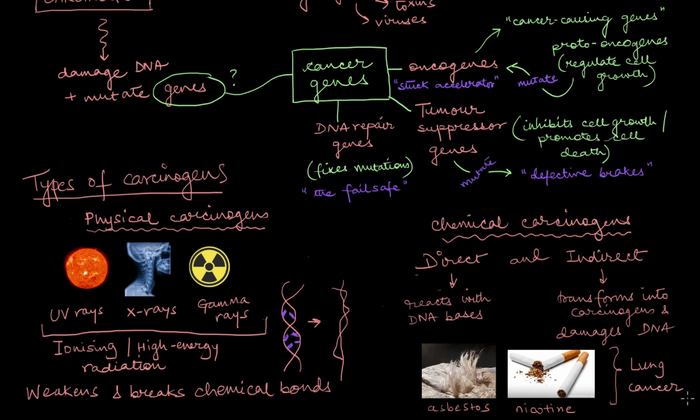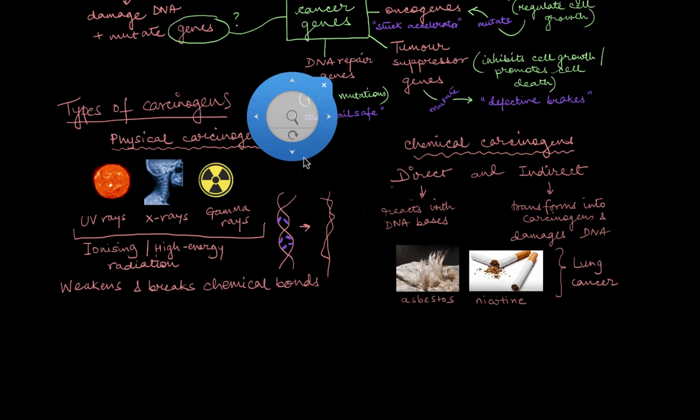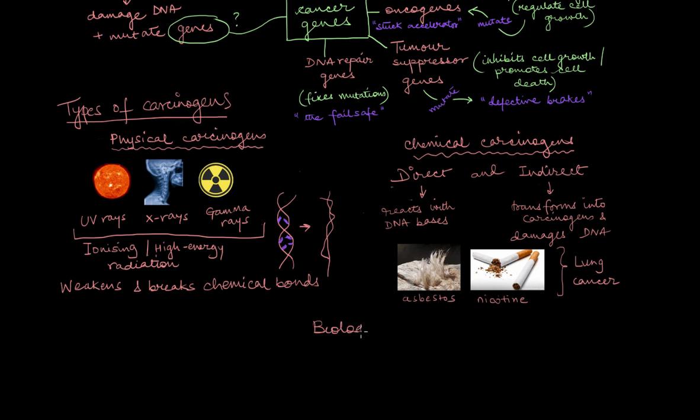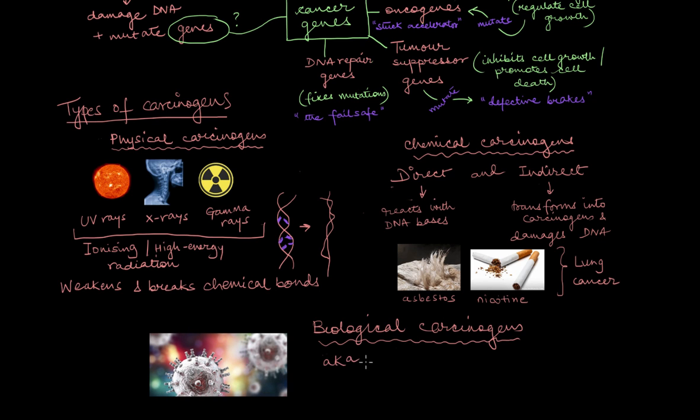There is another type of carcinogen which is rather peculiar in nature—biological carcinogens, aka viruses. Certain kinds of viruses called oncogenic viruses can cause cancer with the help of their own set of oncogenes. They either insert these viral oncogenes into our cell and wreak havoc, or they activate our proto-oncogenes and wreak havoc.